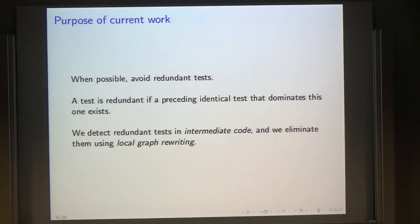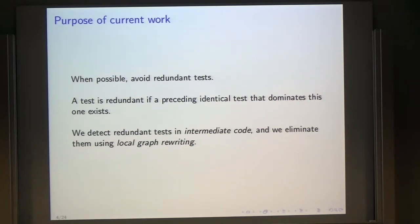The purpose of the current work is to avoid redundant tests. A test is redundant if you have a preceding identical test that dominates the other one. Domination is a formal graph theoretical concept that I'm not going to explain. Basically it means that all paths must go from one to the other, so you can eliminate the second one. The problem is how do you detect that you can.